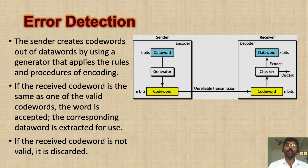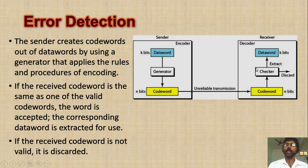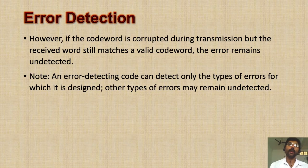To understand this very easily, here is a small example. Imagine you are sending capital alphabets A to Z. If the sender sends a capital A, during transmission it is converted into capital F. The checker thinks that the received word F is a valid word because it is from the alphabet, so it receives it instead of discarding it. Because A is converted to F, and F is also a valid codeword, it will accept it. Such a problem occurs in error detection.